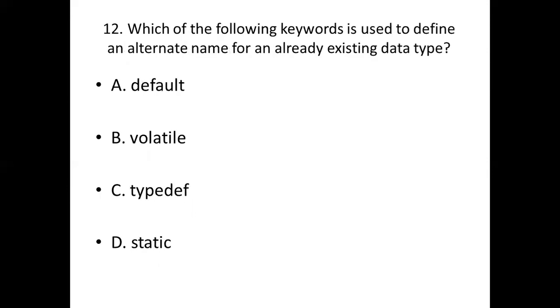12th bit. Which of the following keyword is used to define an alternate name for an already existed data type? Option A, default. Option B, volatile. Option C, typedef. Option D, static. Answer is the same. Option C, typedef.